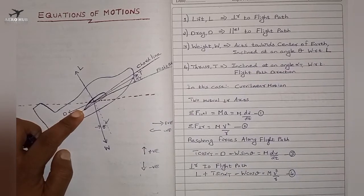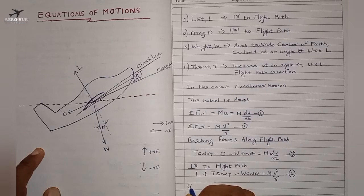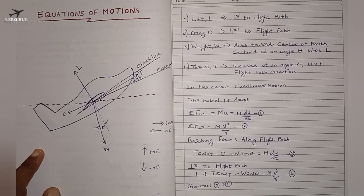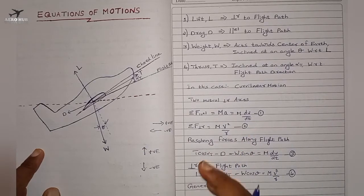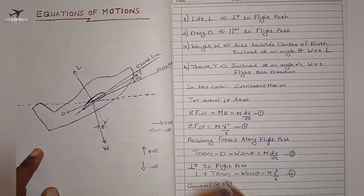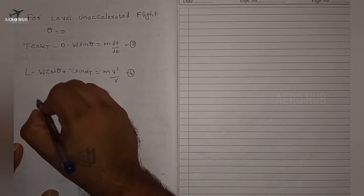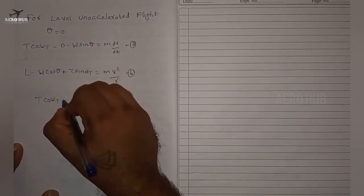Equations three and four are the general equations of motion for the aircraft. Now, for a level flight condition with no acceleration, the value of θ equals zero. Setting θ equal to zero in equation three: sin(0) is zero, so T cos(αt) minus D remains.